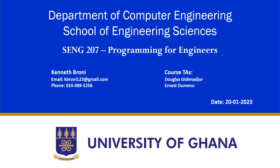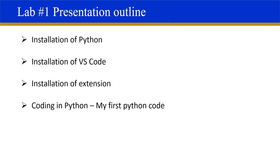Hello everyone, my name is Kenneth Brony and this is going to be Lab 2 for SN207 Programming for Engineers. This is the presentation outline — it's a very short PowerPoint. We are going to look at the installation of Python, installation of VS Code, installation of an extension for VS Code, and we are going to write some code, which will be your first Python code for some of you.